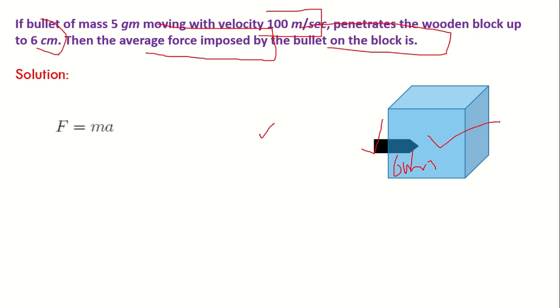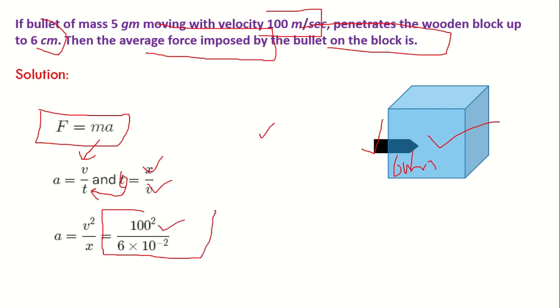We know that from Newton's second law, force equals mass into acceleration, and acceleration is given by v upon t, and t is given by displacement upon velocity. If I substitute the value of t in this expression, I will be getting a equals v square upon x. Now if I substitute all the values, I will be getting this value.